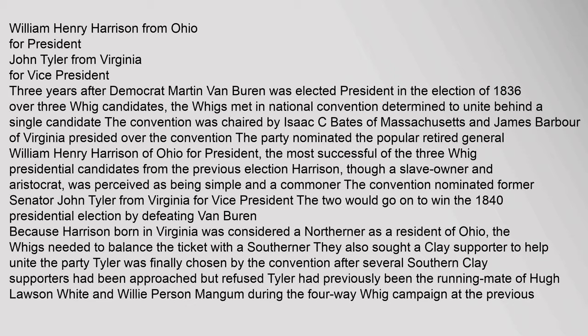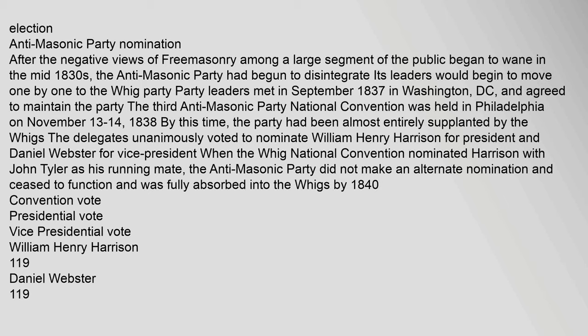Anti-Masonic Party nomination: After the negative views of Freemasonry among a large segment of the public began to wane in the mid-1830s, the Anti-Masonic Party had begun to disintegrate, and its leaders began to move one by one to the Whig Party. Party leaders met in September 1837 in Washington, D.C., and agreed to maintain the party. The third Anti-Masonic Party National Convention was held in Philadelphia on November 13-14, 1838. By this time the party had been almost entirely supplanted by the Whigs. The delegates unanimously voted to nominate William Henry Harrison for president and Daniel Webster for vice president. When the Whig National Convention nominated Harrison with John Tyler as his running mate, the Anti-Masonic Party did not make an alternate nomination and was fully absorbed into the Whigs by 1840.